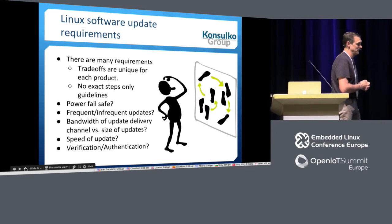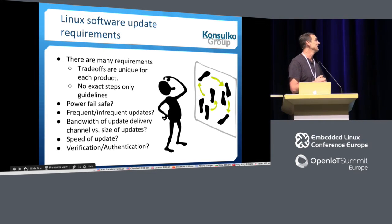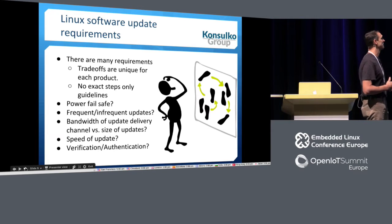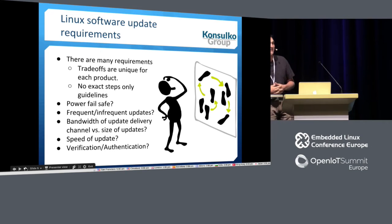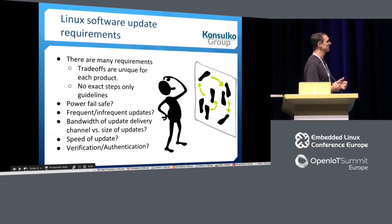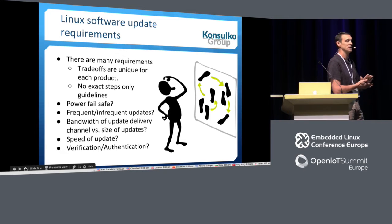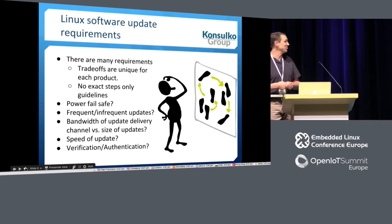Anytime you're looking at Linux software update, you have to think about requirements. There are many requirements, and that's the first thing to keep in mind: there is no one proper software update strategy. It depends on your requirements, and every product is different. You have different things pulling you, both technically, hardware constraints, and whatever your product features are. So you're not going to get any exact steps today — only guidelines.